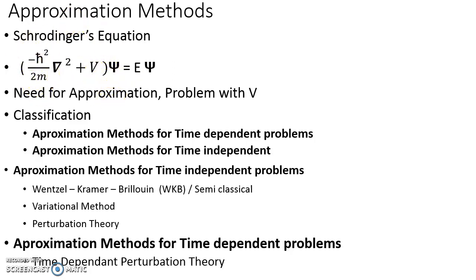For example, a system can have a potential energy in terms of its position. Most often we represent the potential energy in terms of a harmonic oscillator as half kx squared. However, there will be many contributions to this potential. A charged particle can have an electrostatic potential energy arising from a scalar potential, or it can have a magnetostatic potential energy arising from a vector potential. Most often there will be an electromagnetic potential also contributing corrections to this energy. So in most practical situations one will have to settle for an approximate solution instead of an exact solution.